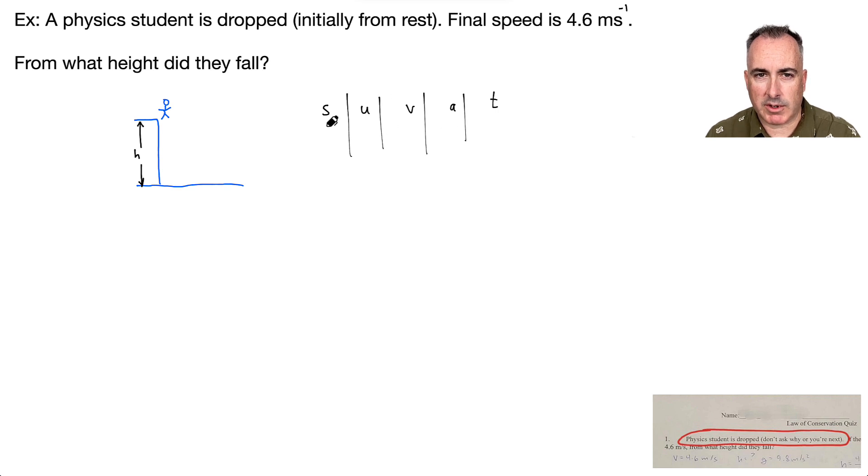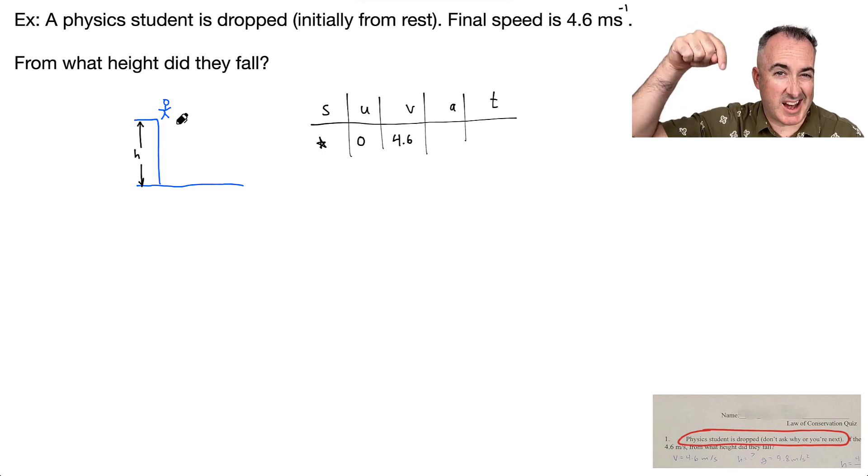Let's consider what we know, what we don't know, what we want. S, the displacement. Do I know that? I don't. In fact, that's what I want to find. So I'm going to put a star by that. U, do I know the initial speed? I do. Initially from rest means speed must be zero initially. That's U. V is this final speed. It's 4.6. But keep in mind, if I want to be really careful, not everybody is this careful, but I really like to be careful here. What's my speed? Technically, aren't I going down? If I'm going down, I'm going to say negative here for negative 4.6.